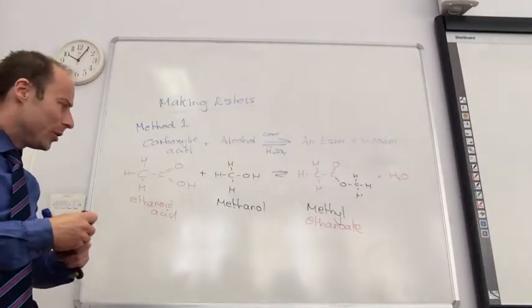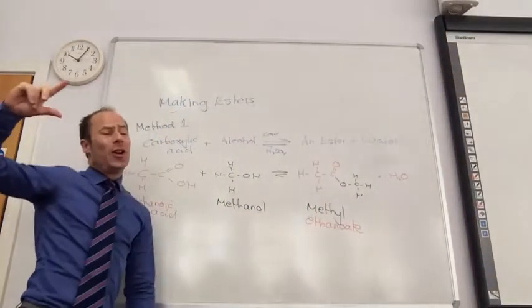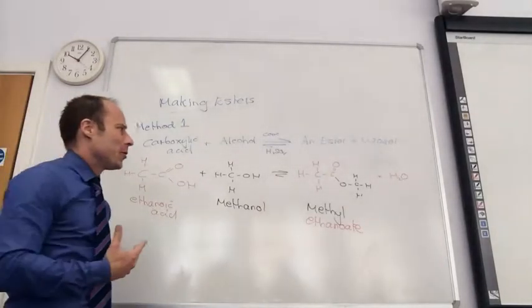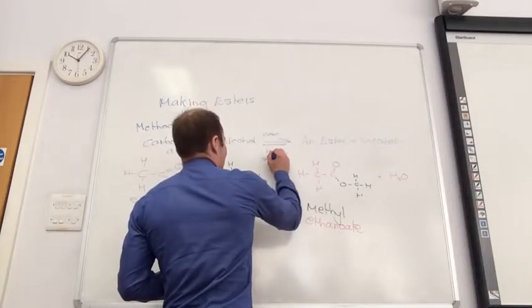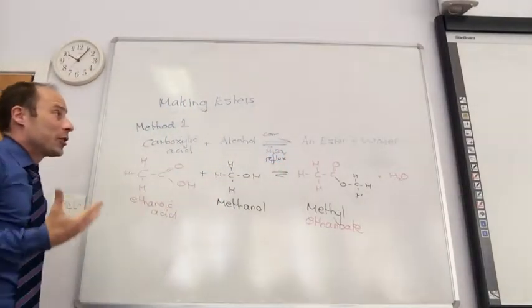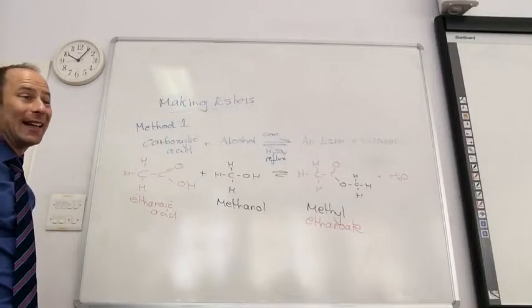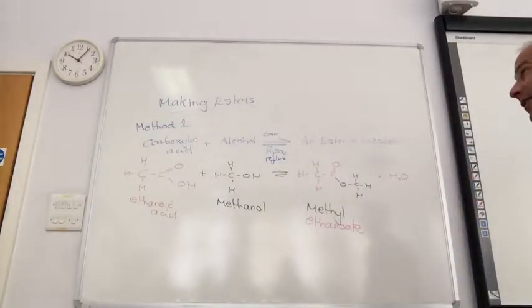Now that's fine, but there's a problem with this method. One of the problems is that it's equilibrium and it doesn't generally go to a very high yield. I also need to reflux as well, so concentrated H2SO4 and I need to reflux to get that to go. The main one is it's in equilibrium. So there is an alternative way to make an ester which is a much better way. It's more reactive and it generally gets better used.